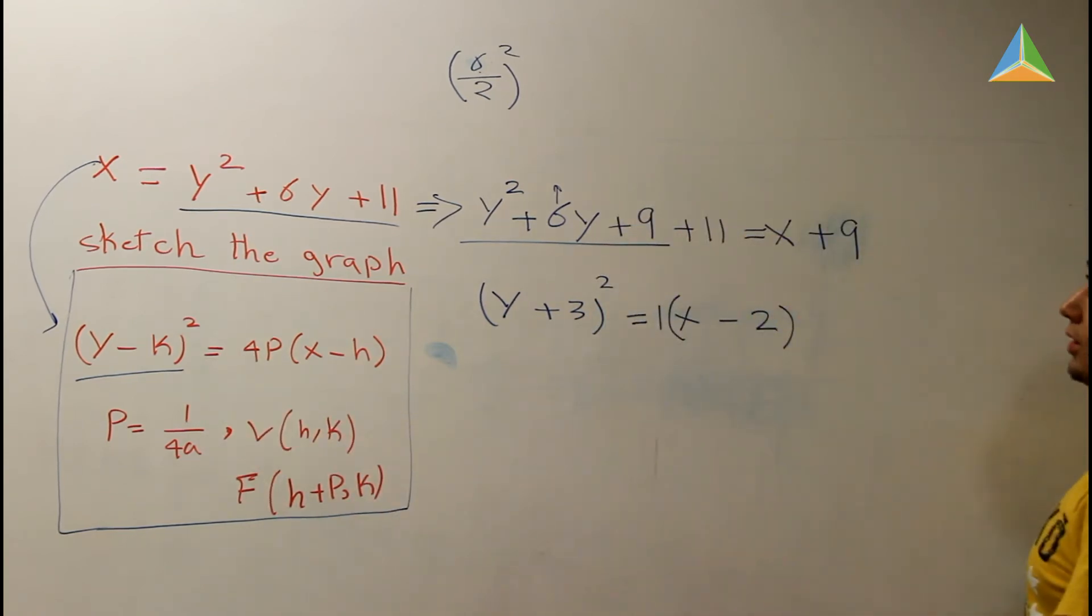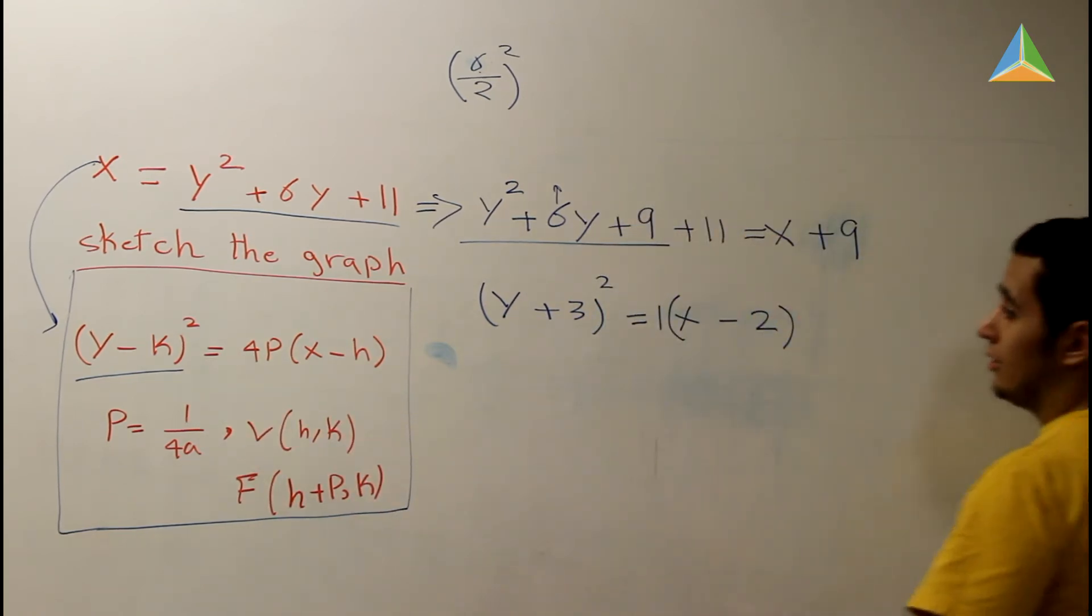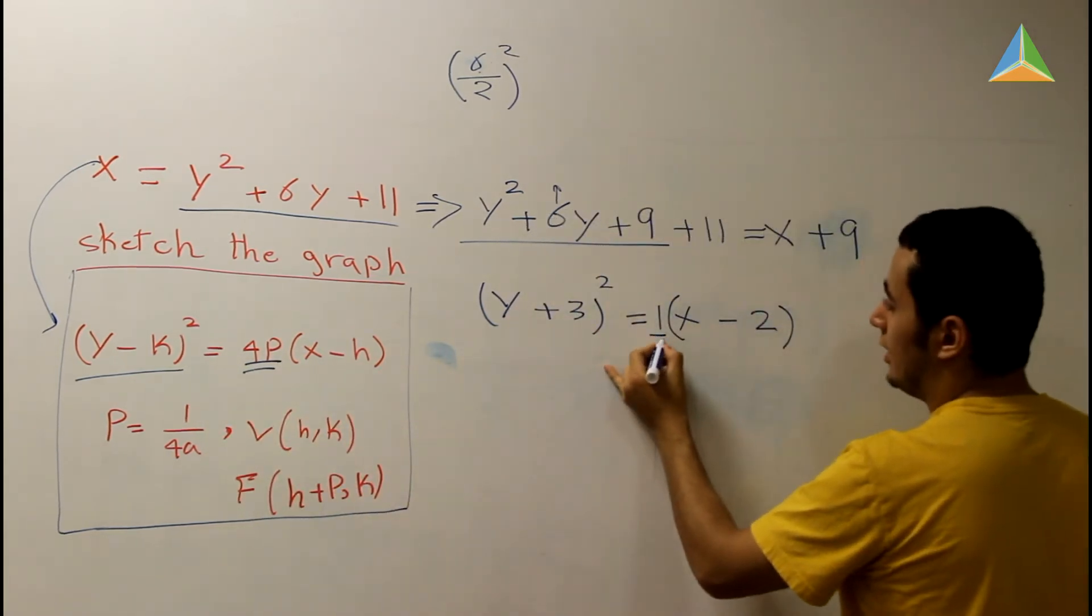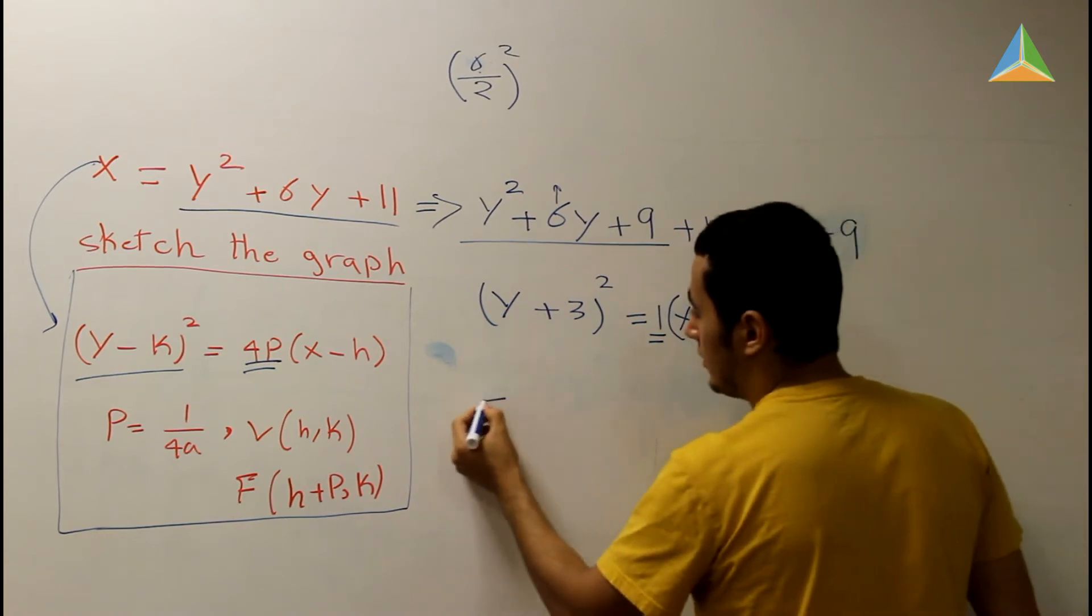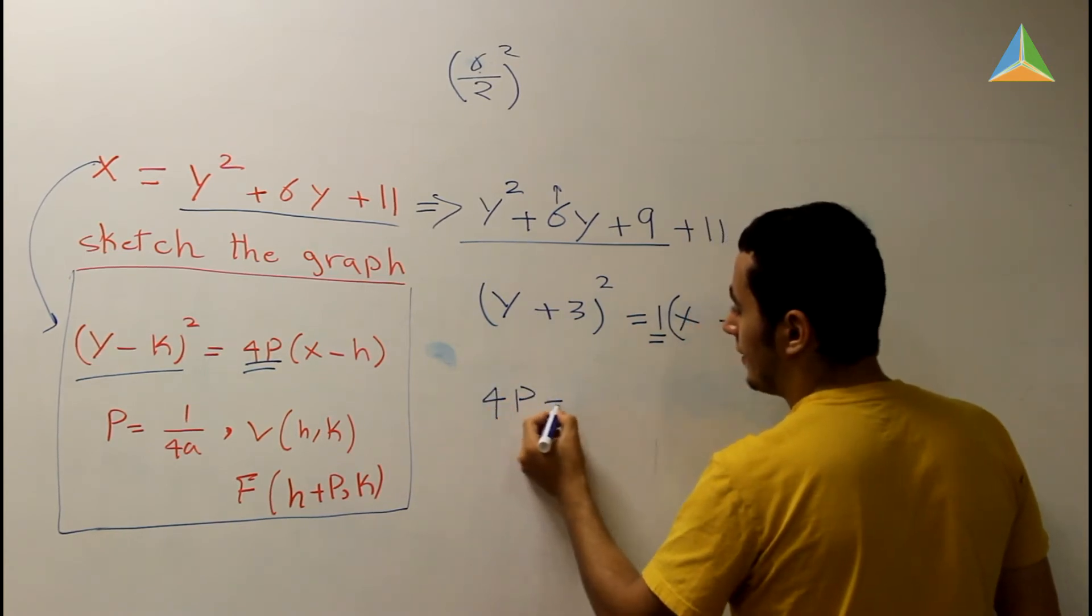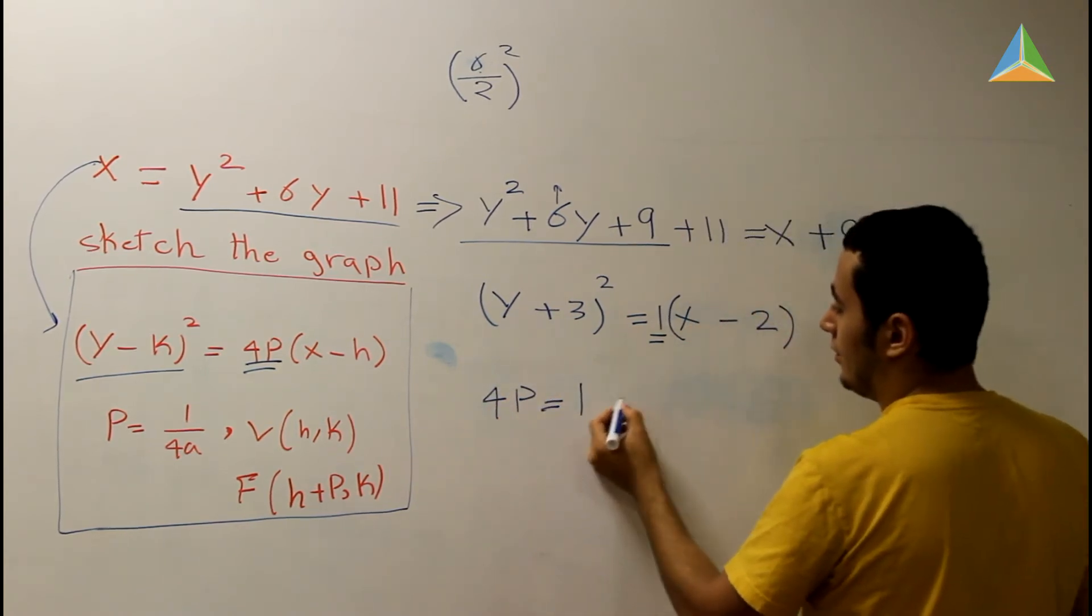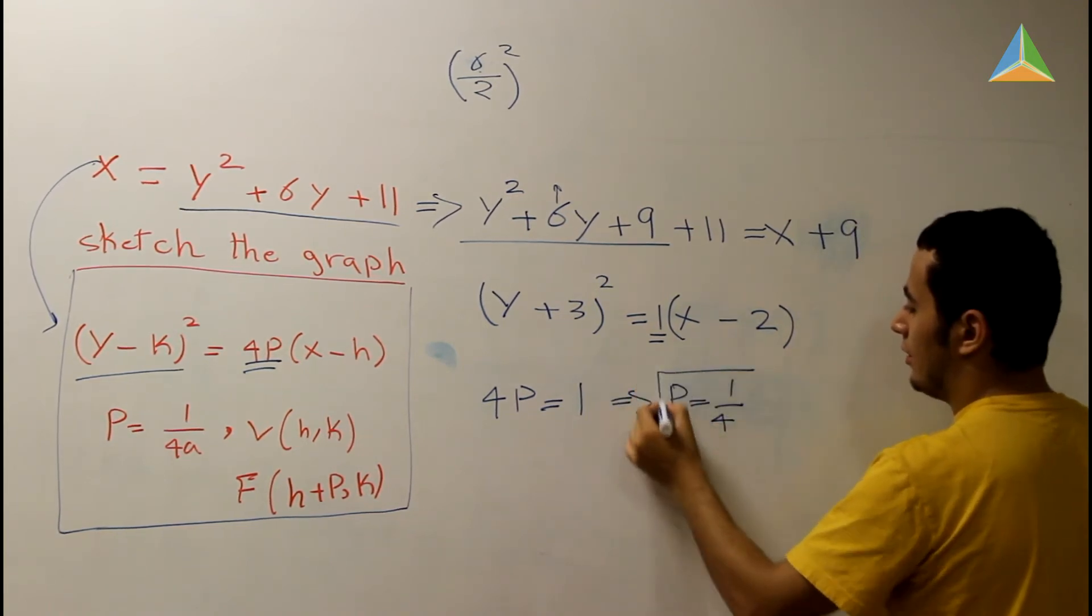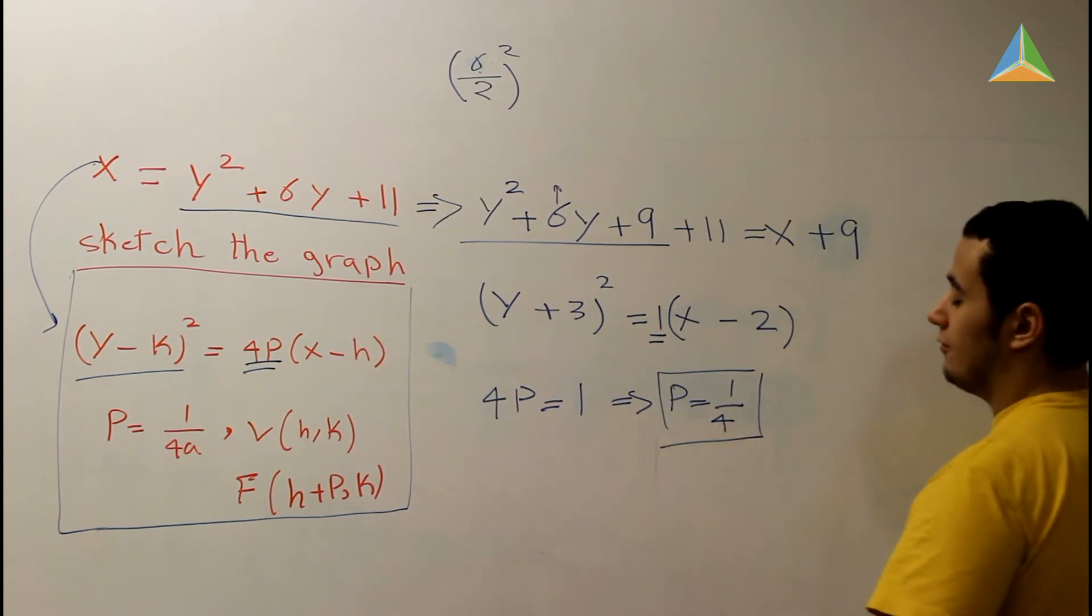The first thing we want to do is to find P. We have here 4P, right? We have here 1. That means 4P equals 1, which means P equals 1/4. We get the value of P.